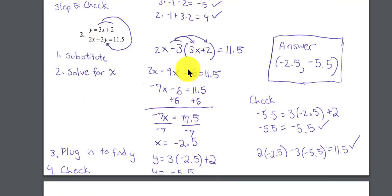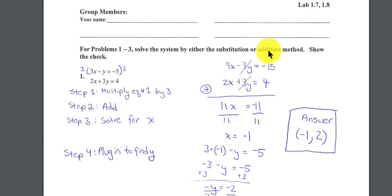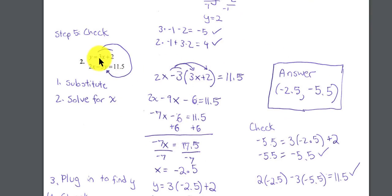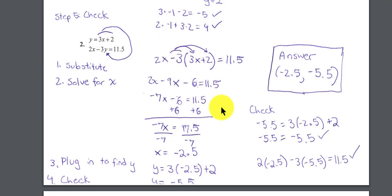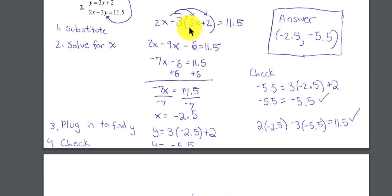Problem 2, we can still use the addition or elimination method, but it looks like since this problem is already solved for y, we use substitution. So if I know y equals 3x plus 2, I can take this 3x plus 2 and replace the y with 3x plus 2. So instead of 2x minus 3y, I write 2x minus 3 times what y is equal to, which is the 3x plus 2. Now you do the algebra, you're going to distribute the negative 3.